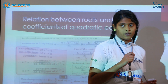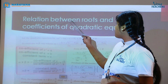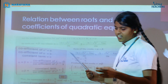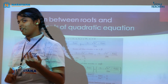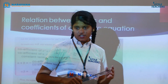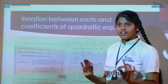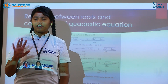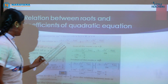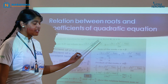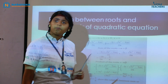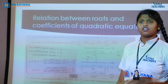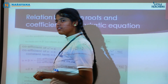To answer this question, first you need to know the relationship between roots and coefficients of a quadratic equation. What is a quadratic equation? By name we can understand — quadratic means 2. The general form of a quadratic equation is Ax² + Bx + C = 0, where A, B, C must belong to real numbers and A is not equal to 0.